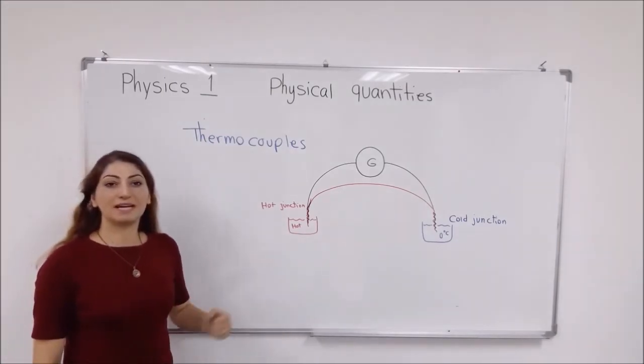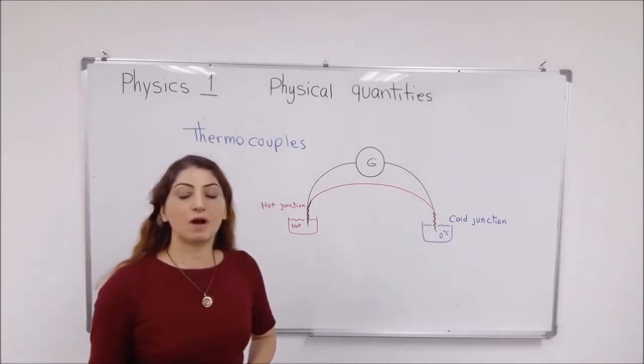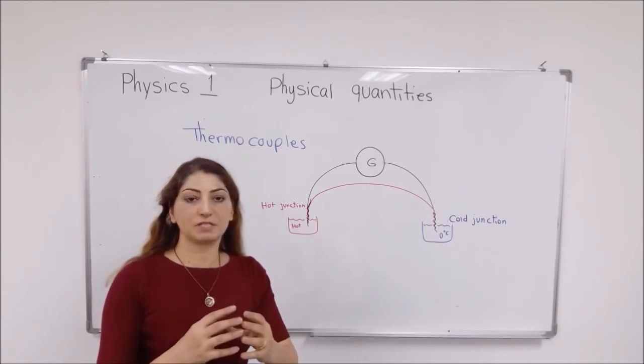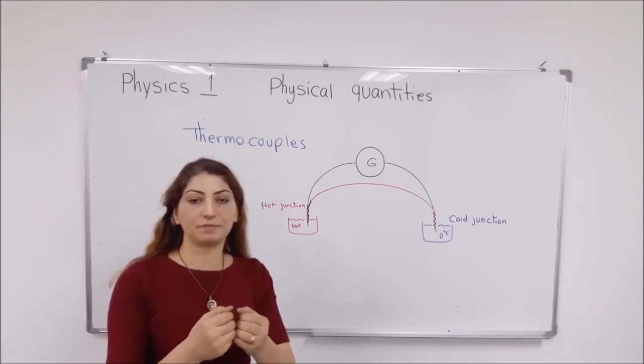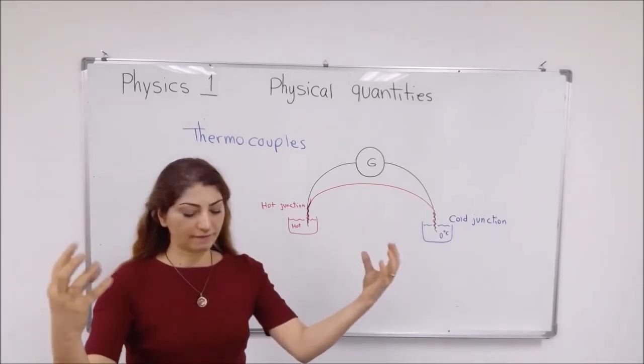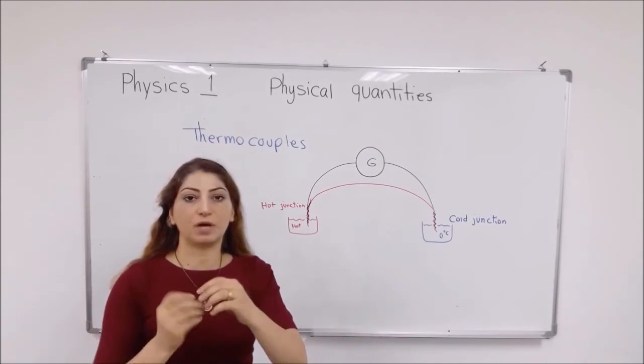Now at the next part, we have thermocouples. Thermocouples have two different wires from different materials. There are two ends, they have actually been wrapped together, they have been tied together.